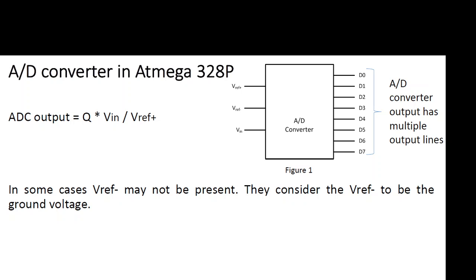Welcome back to the video series on the ADC converter of the ATmega328P microcontroller. We will discuss the free running mode of this microcontroller with an interrupt to detect the end of the conversion. The ADC output is the input voltage divided by the reference voltage, multiplied by the number of quantization levels — in this case 1024 — giving a 10-bit output.